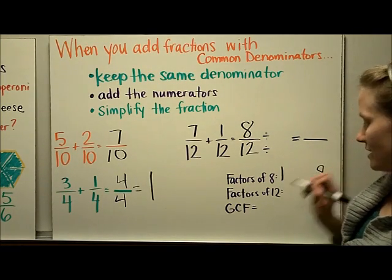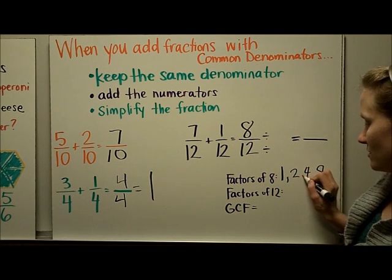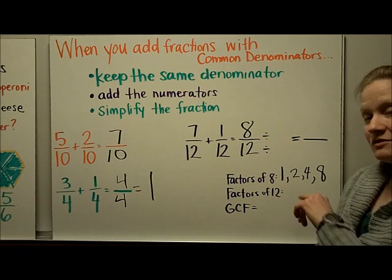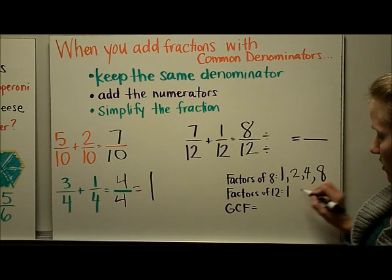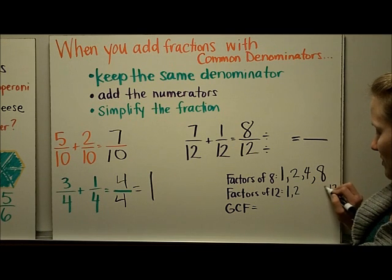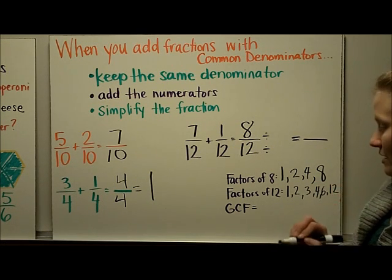1 times 8 makes 8. Also, 2 times 4 makes 8. So the factors of 8 are 1, 2, 4, and 8. Factors of 12, break it down. 1 and 12. 2 times 6 makes 12. And 3 times 4 makes 12.